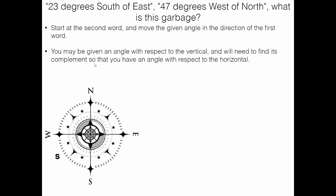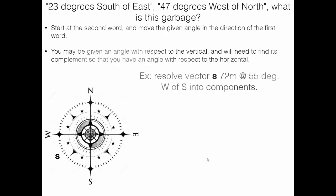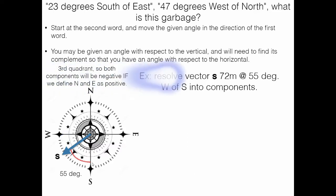When given an angle with respect to the vertical, we need its complement to get the angle with respect to the horizontal so we can use our formulas. '47 degrees west of north' is an example — we start at north and go 47 degrees west, so the angle is defined with respect to the vertical. Another example: 72 meters at 55 degrees west of south. We start at south and go 55 degrees west, giving us a vector with magnitude 72 m at 55 degrees from the vertical.